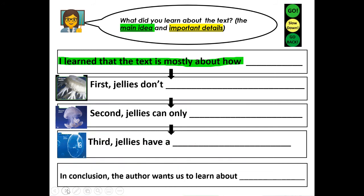You do not need to write the main topic sentence. You're going to focus on the three detail sentences that support the main idea. First, jellies don't — what don't jellies have? Say your sentence out loud and finish it. Push pause and write your first yellow detail sentence. When you're finished writing your complete sentence, push play to rejoin the lesson.